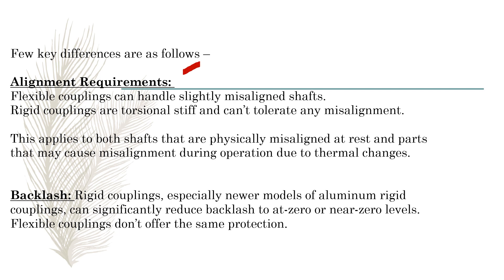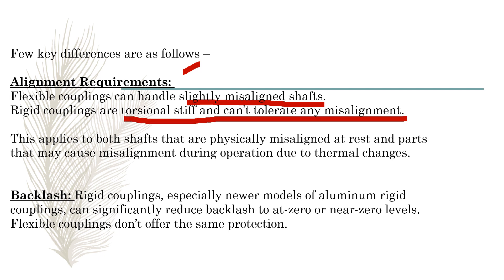Regarding alignment requirements: flexible coupling can handle slight misalignment of the shafts, which is still acceptable. But rigid coupling is torsionally stiff and cannot tolerate any misalignment — the misalignment tolerance must be stricter compared to flexible couplings. This applies to both shafts that are physically misaligned at rest and parts that may cause misalignment during operation due to thermal changes.